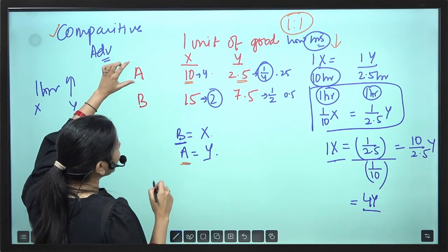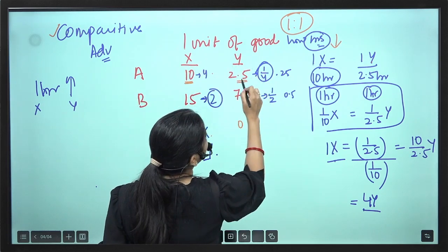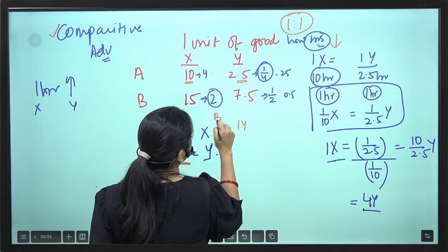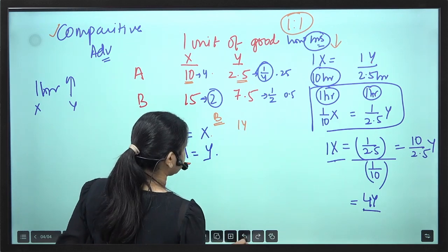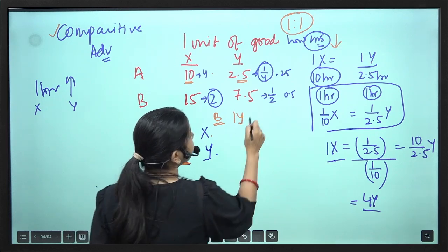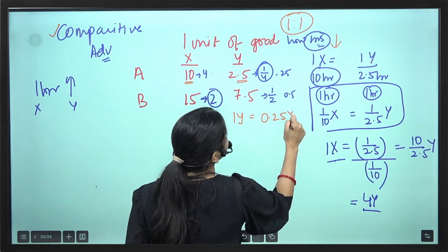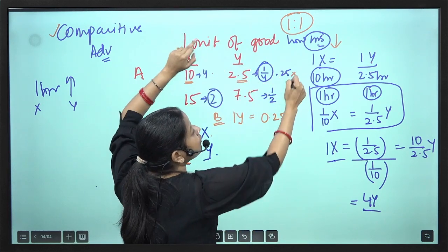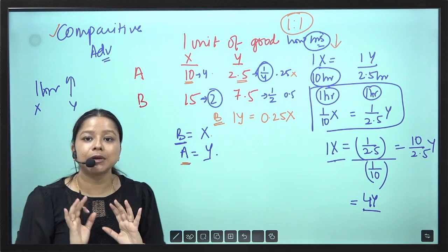To find the range, let's start with Country A. Country A is giving Y. It says: if I give you 1Y, how much minimum X will I be needing? 0.25X. Because to produce 1Y, Country A foregoes 0.25X. So when Country A gives 1Y, it needs a minimum of 0.25X in return.